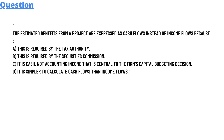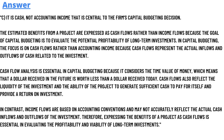Option D: it is simpler to calculate cash flows than income flows. The correct answer is option C — it is cash, not accounting income, that is central to the firm's capital budgeting decision.